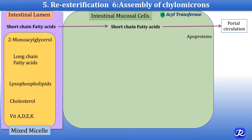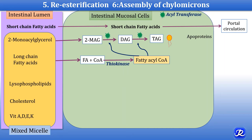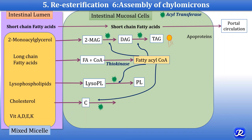Long chain fatty acids are absorbed in the intestinal mucosal cells and activated by the enzyme thiokinase to form fatty acyl-CoA. These fatty acyl derivatives are used for esterification of 2-monoacylglycerol by the action of acyl transferase, forming diacylglycerol and then triacylglycerol. Lysophospholipids are re-esterified with acyl transferase and acyl derivatives to form phospholipids. Cholesterol esterification occurs with fatty acyl derivatives and acyl transferase to form cholesterol esters. Vitamins A, D, E, and K are also absorbed in the intestinal mucosal cells.